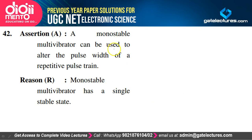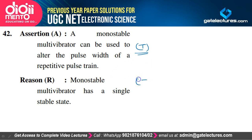A monostable multivibrator can be used to alter the pulse width of a repetitive pulse train — true. A monostable multivibrator has a single stable state — also true. But R is not the correct explanation of A. Option B is the correct option.